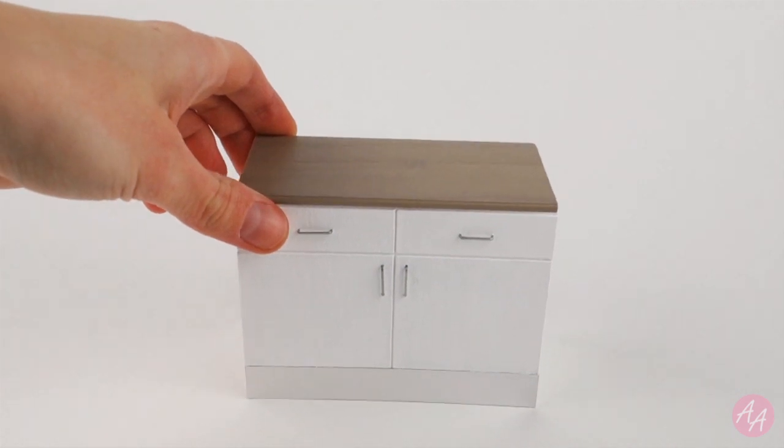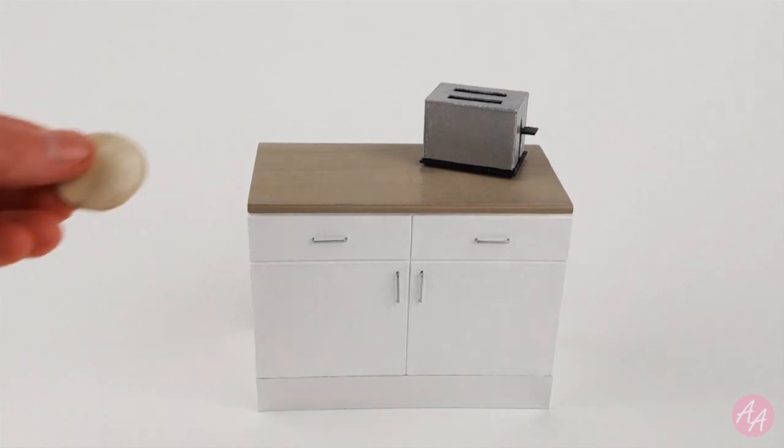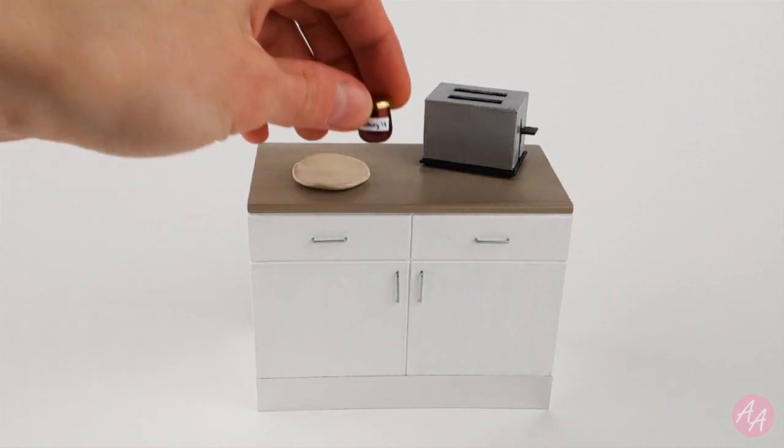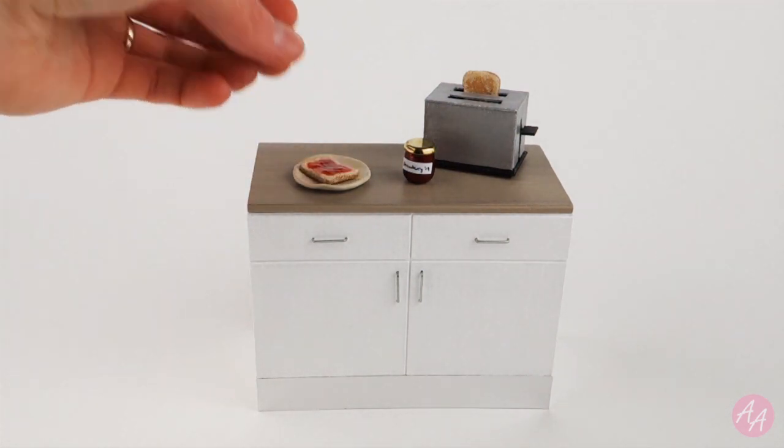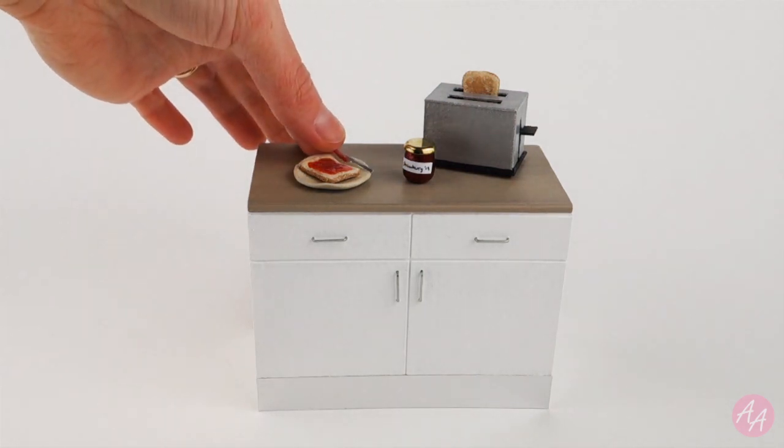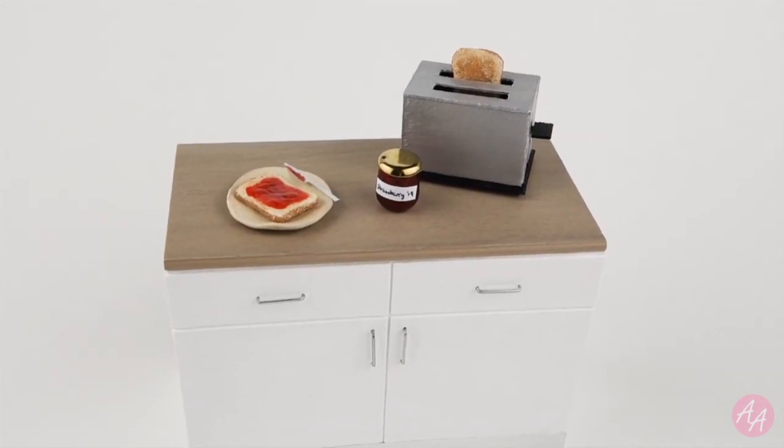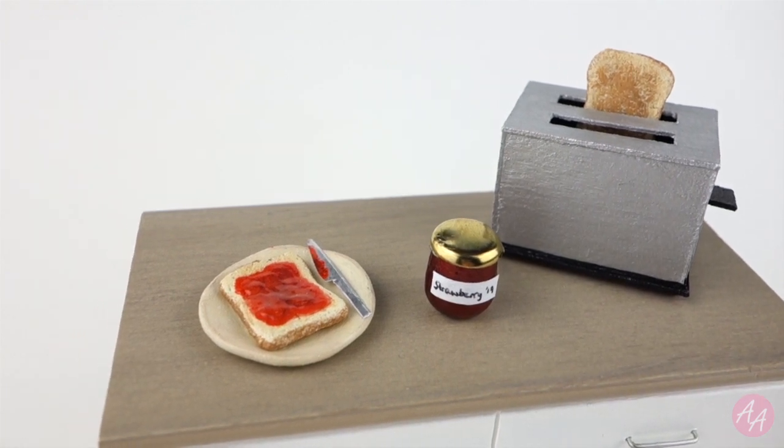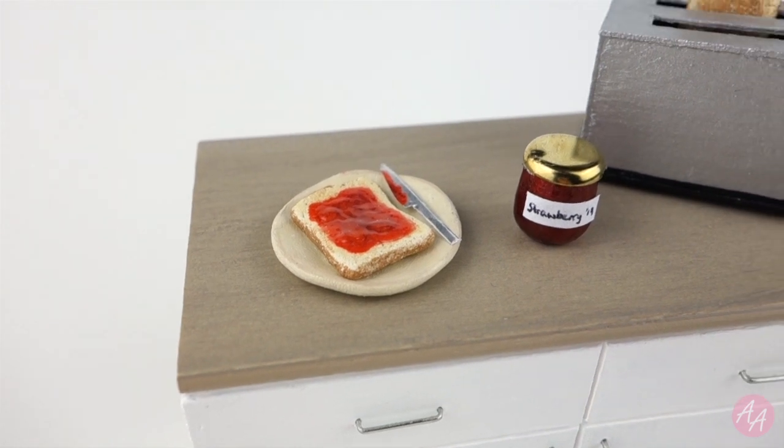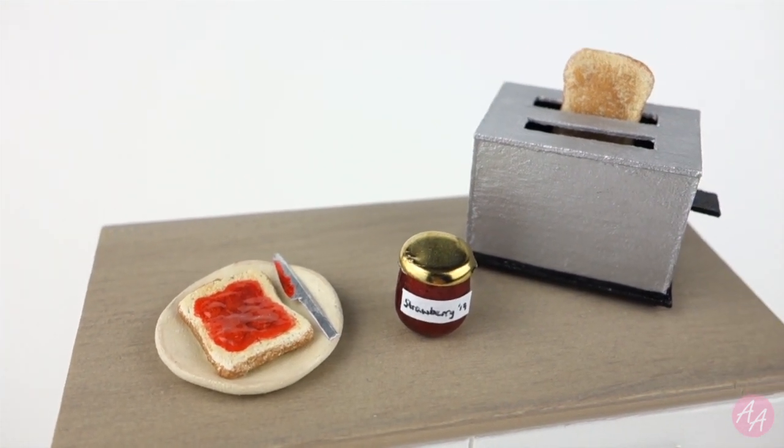With all the elements complete it's time to assemble my scene. I hope this video gave you some tips for miniature making. There were some things I'd never made before, like the jam jar, so I enjoyed figuring out how to do that. Let me know in the comments what else you'd like to see me make, and stay tuned for another video soon where I make a different scene using this kitchen worktop. Thanks for watching, bye!